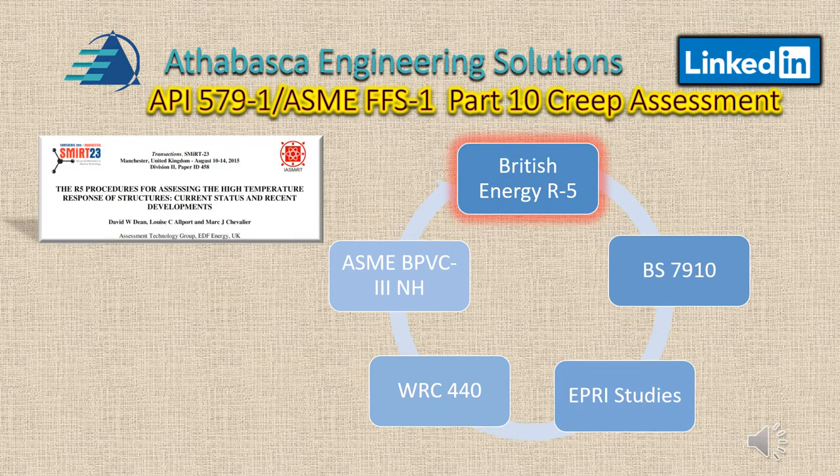The British energy industry uses the R5 procedures as a method to assess the integrity of nuclear and conventional plants operating at high temperatures. They routinely use these standards for assessment of metallic components — for example, for advanced gas-cooled reactors that typically operate in the 470 to 650 degrees centigrade range. This is an international procedure that has been developed over the years with cooperation from several countries.